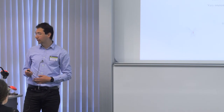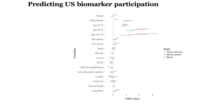Here I have the three stages: nurse visit in blue, blood consent in red, and actually giving blood in green, with respondent characteristics on the left. The scale is odds ratios. For example, females have higher chances of participating in the nurse visit compared to men, but lower chances of actually giving blood compared to men. This is interesting because it shows that the mechanisms for missingness might be different across stages — one reason why we might want to separate them.